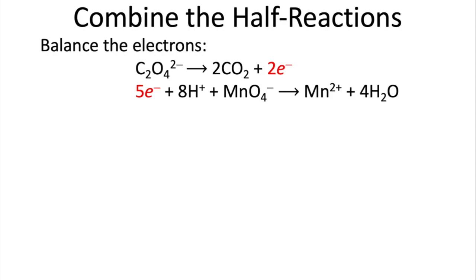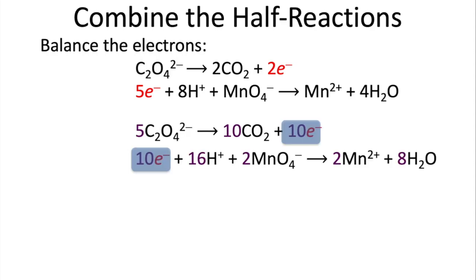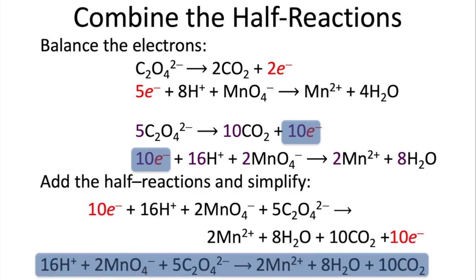Now we're going to combine the two reactions together. In our oxidation half-reaction we had two electrons released, but in our reduction half-reaction we gained five electrons. So we have to find the least common multiple — in this case that's ten. So we multiply the top reaction by five and the bottom reaction by two. Then we're going to cancel everything out that appears on both sides. Our electrons should always be equal and cancel out. Sometimes water, H⁺, or other things will cancel out too, and that's normal. So this at the bottom is our overall balanced redox reaction.